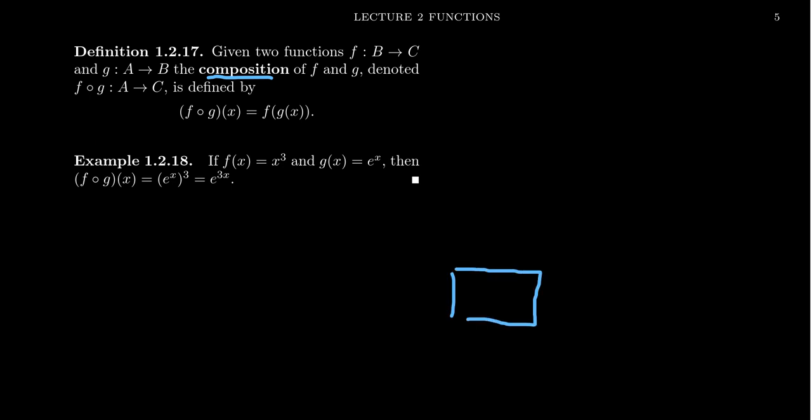People often like to think of the function idea metaphorically as like a machine. So we have some machine, which we're going to call G, for which you can take any number in its domain, you can stick it in there, and it'll output a different number, G of X.